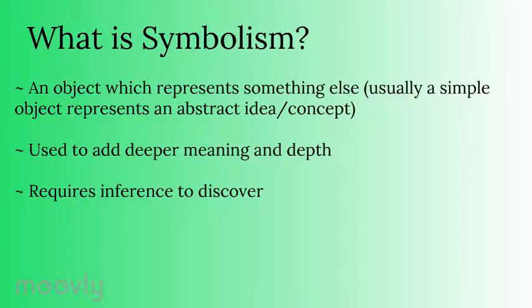What is symbolism? Symbolism is when an object represents something else. Usually a simple object will represent an abstract idea or concept. It's used to really add deeper meaning and depth to characters, to plot, to setting, and really adds a fantastic layer when you're reading a text. It does require some good inference skills to be able to discover these in texts.